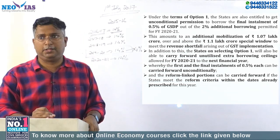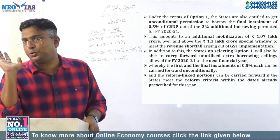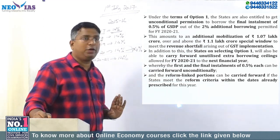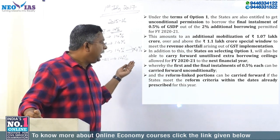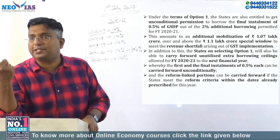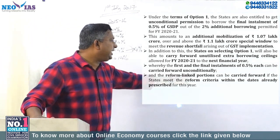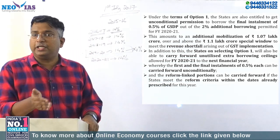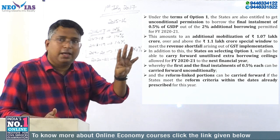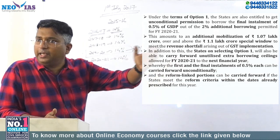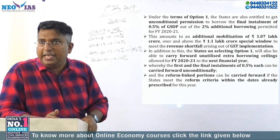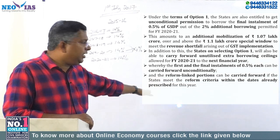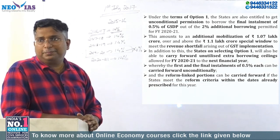All these things are mentioned in the Economic Survey. Since it is mentioned there, you are supposed to know it — and it was a very important current affair. The carry-forward applies to the first and final installment of 0.5% without any condition. The reform-linked portion — that is, the 1% middle portion — can also be carried forward if the state meets the reform criteria within the dates already prescribed. The reforms linked to this 1% are: One Nation One Ration Card, power sector reforms, urban local body reforms, and other reforms. If they started implementing the reform criteria within the prescribed date, that 1% can also be carried forward.